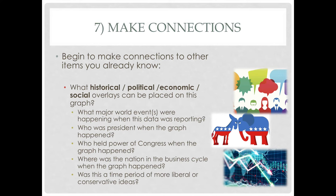Step number seven: we're going to make connections. What do we already know? What historical, political, economic, or social overlays can be placed on this? Was there a major world event covered in this graph? Maybe who was president, who was in control of Congress, where we were in the business cycle — a typical up-and-down pattern we see in economies around the world — or whether this was a time of more liberal or more conservative ideas. We're inching closer toward interpretation, connecting what we're literally reading with our background knowledge. The more you know, the more things you've read, seen, or experienced, the easier making connections will be.